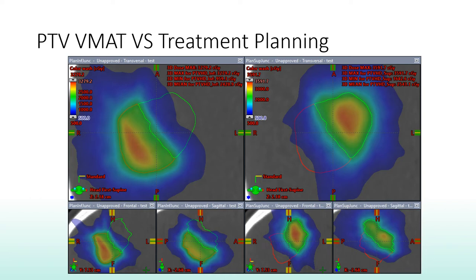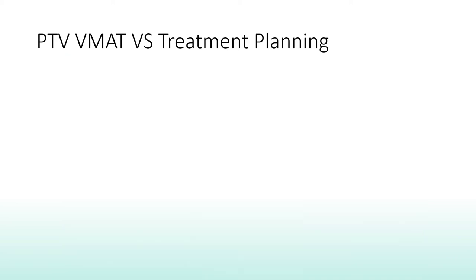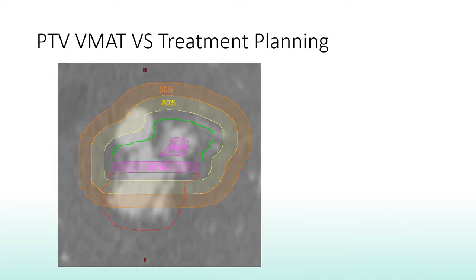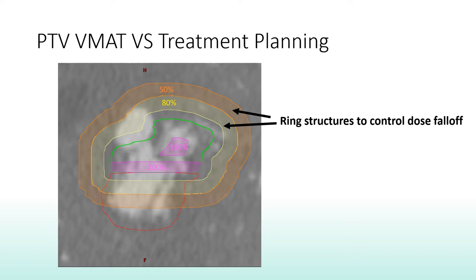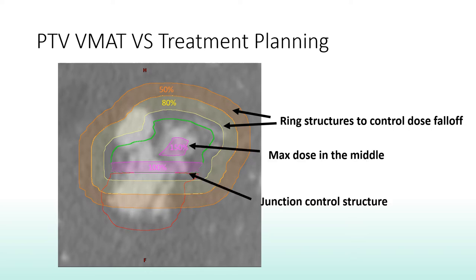We allowed the maximum dose to go as high as possible, just as in Gamma Knife plans. We also created control structures to encourage a sharp dose falloff from the PTV margin and maximum doses in the middle of the stage. The structure at the junction was also used to minimize the dose in this region for the second plans.